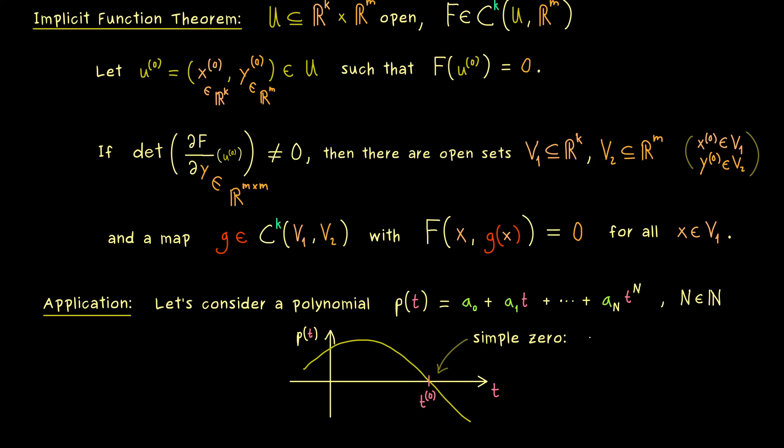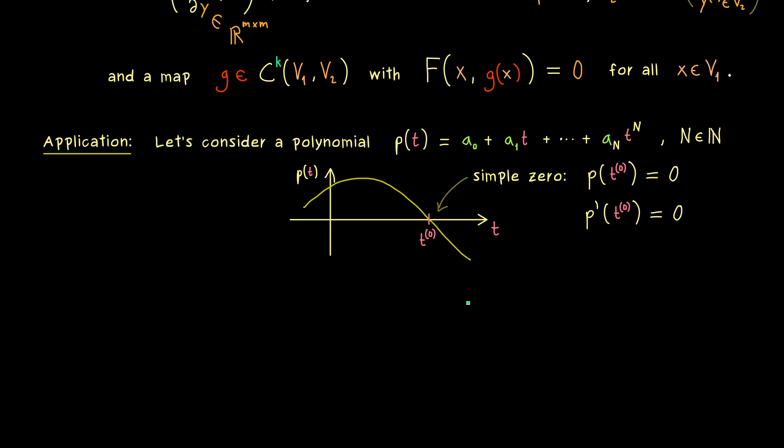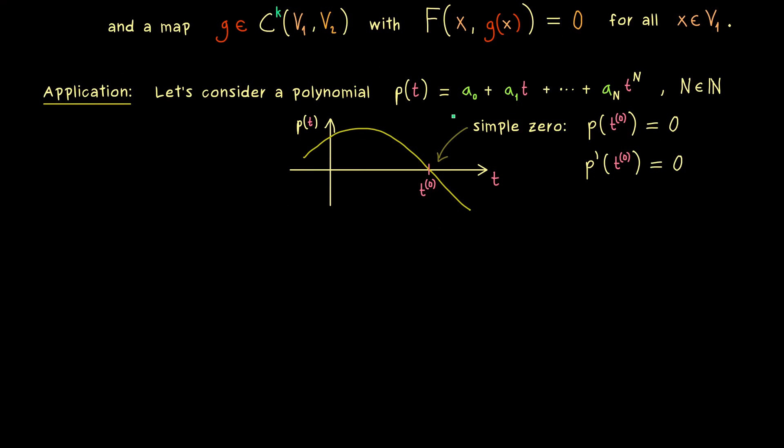This explicitly means that we have two conditions, namely first p(t₀) is equal to zero. But for the second claim we want that the derivative at t₀ is not zero. So this guarantees us that the graph here is really crossing the axis. And then we suppose that this zero is in some sense stable when we change the coefficients a little bit. In fact this claim is exactly what we want to prove in this video.